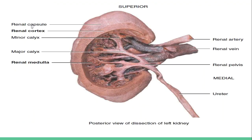This is the posterior view of a dissection of the left kidney. Labels include the major calyx, renal medulla on the right, renal cortex on the left, minor calyx, renal capsule, renal vein, renal pelvis, and the ureter.